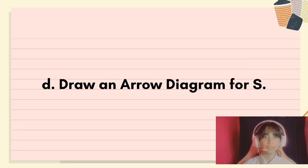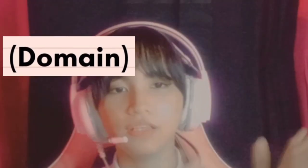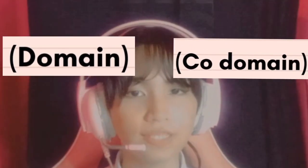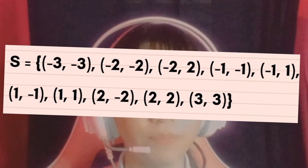And for the last, draw an arrow diagram for set S. To draw an arrow diagram, place the domain on the left side and the codomains on the right side. And the answer that we've got on the third question, letter C, the set of ordered pairs.